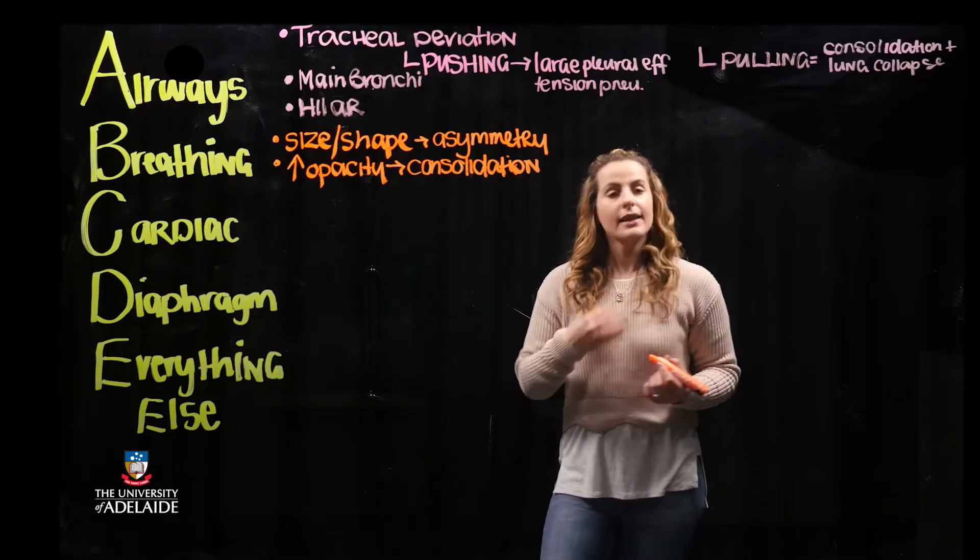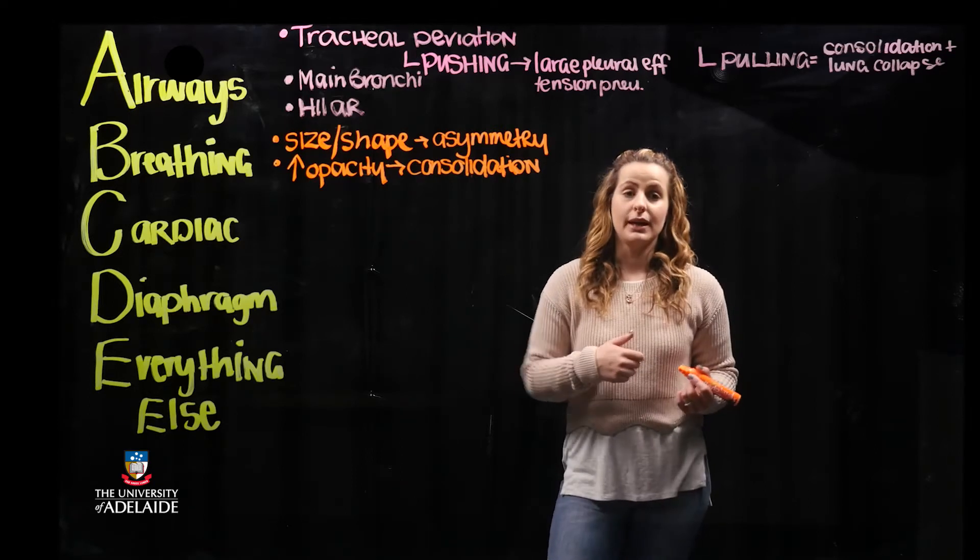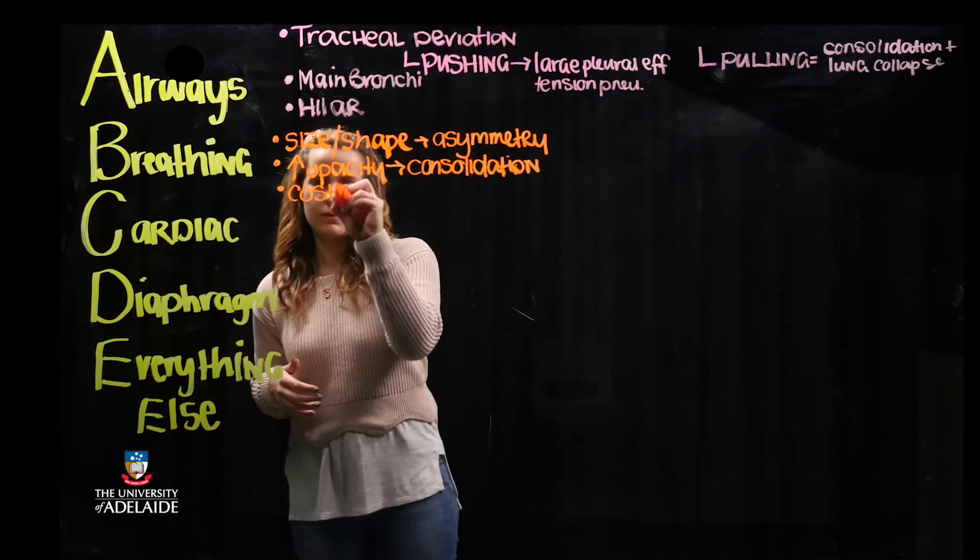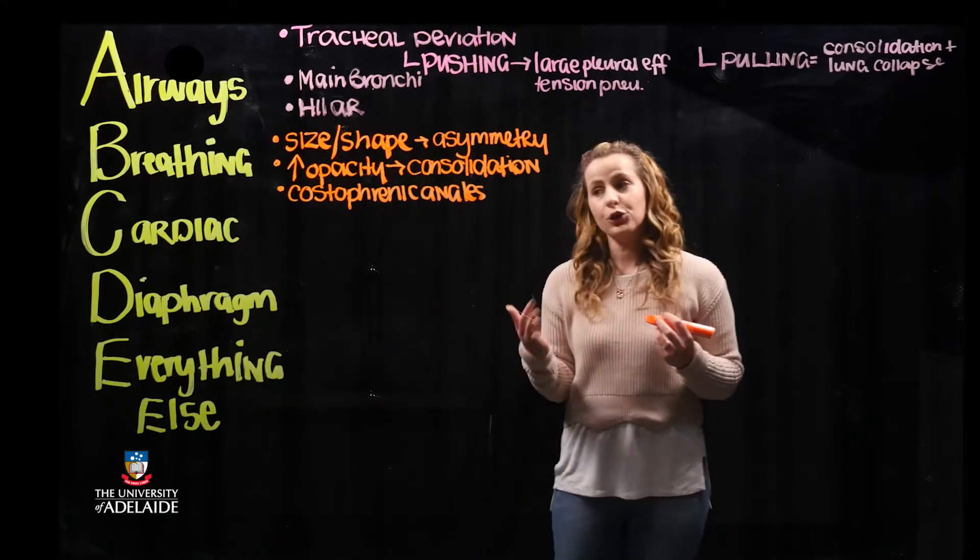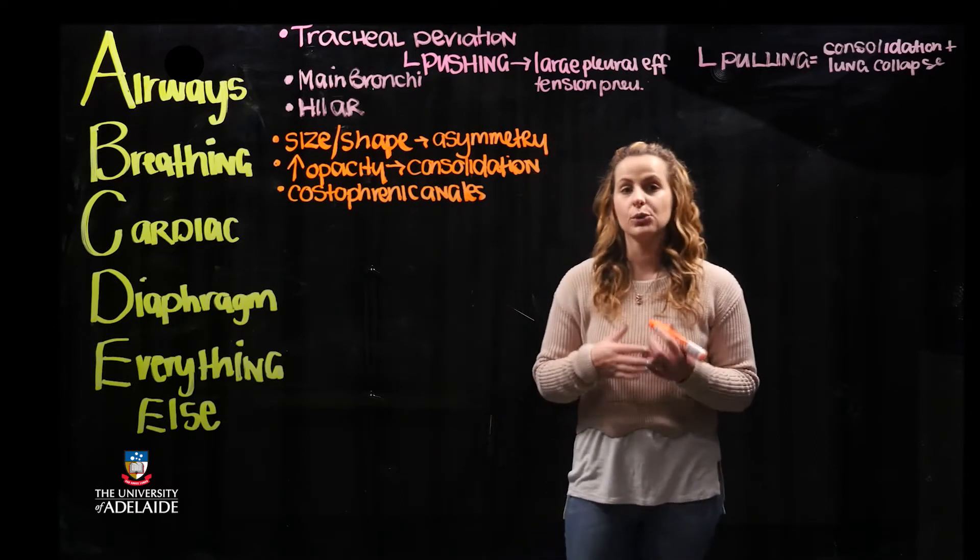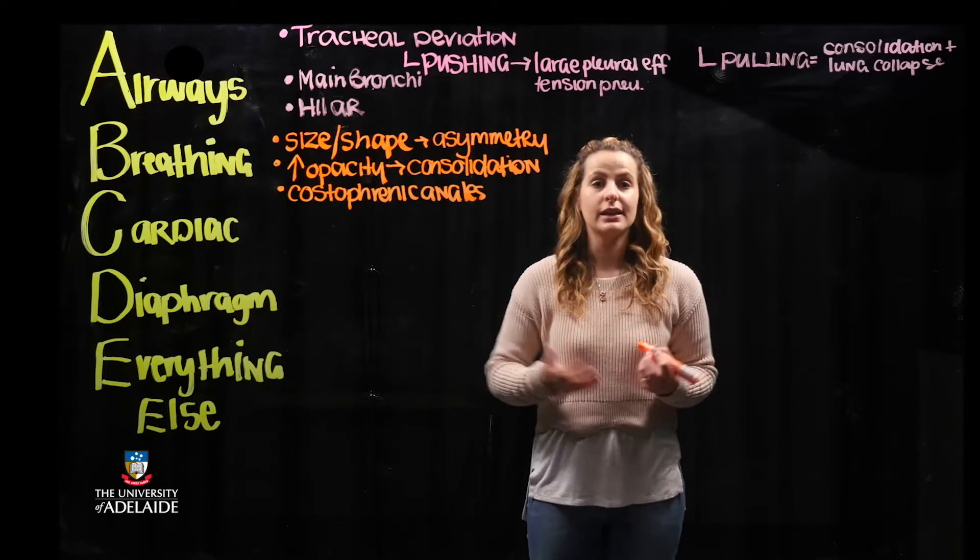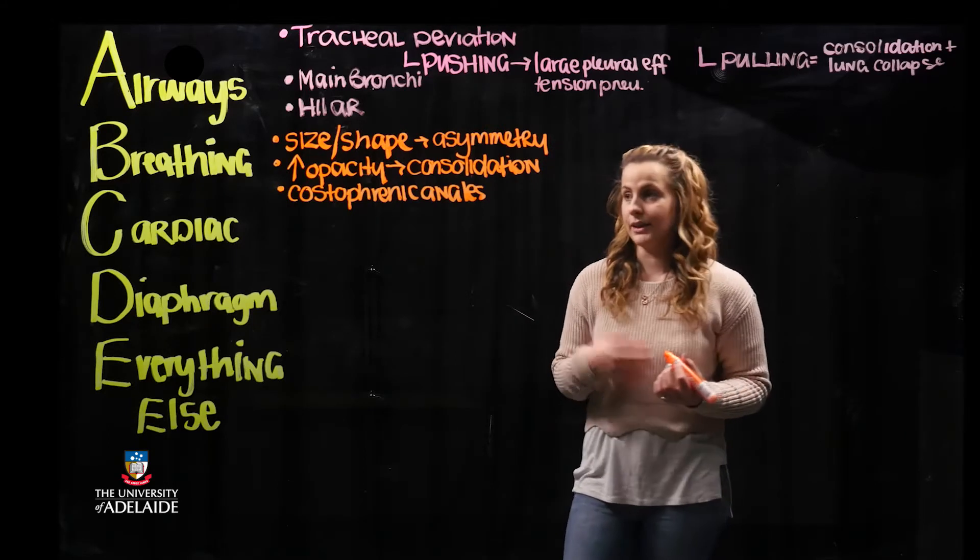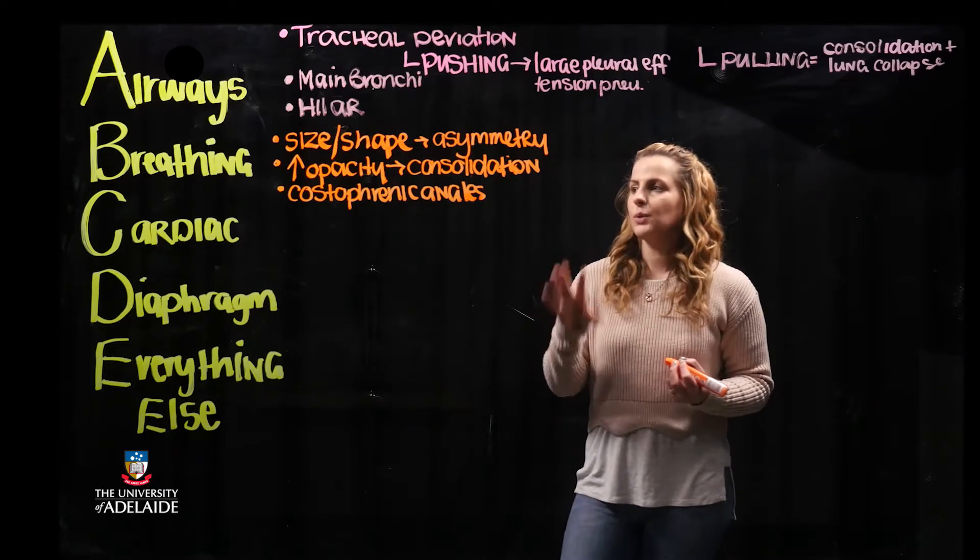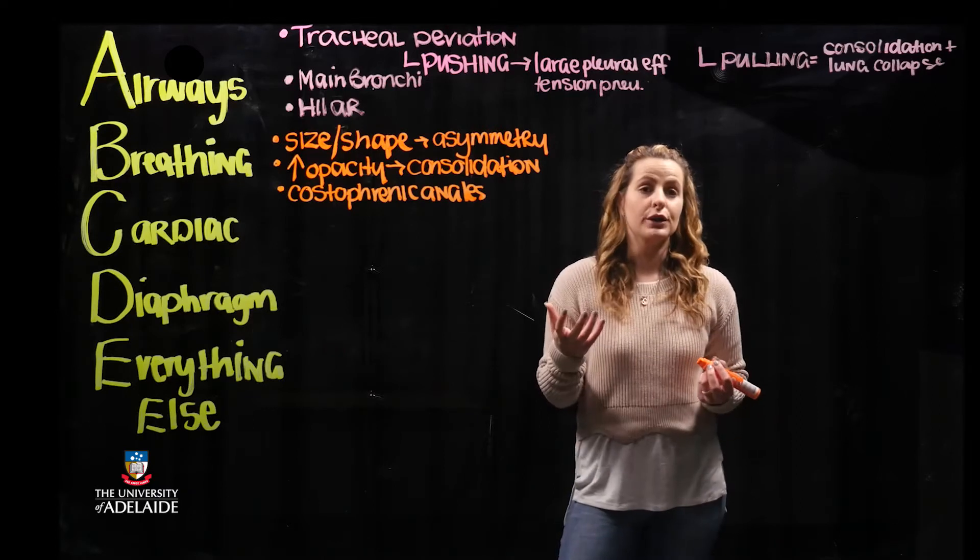The last criteria that we look at is the costophrenic angles or recesses. Increased opacity in the costophrenic angles as well as an alteration in shape—costophrenic blunting—is going to be also indicative or suggestive of infection. And lastly, what we need to look at under B is for pleural effusions.